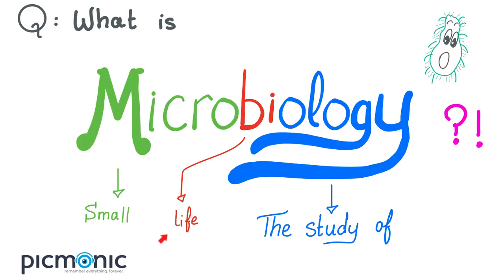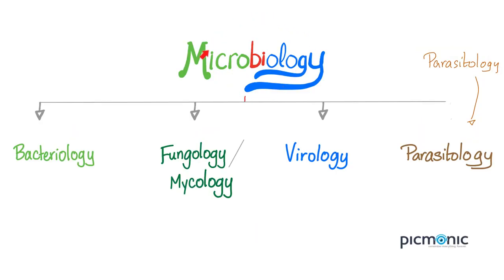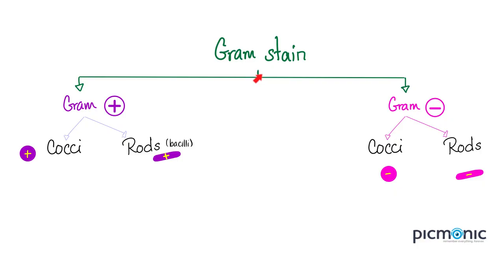Microbiology is the study of small life. Microbes can be divided into bacteria, fungi, viruses, and parasites — though technically parasites are macroscopic. The field includes bacteriology, mycology, virology, and parasitology. By using the gram stain, bacteria are either gram-positive, appearing purple, or gram-negative, appearing pink. Each group is divided into spherical cocci and rod-shaped bacilli. Today we are talking about gram-negative bacilli.